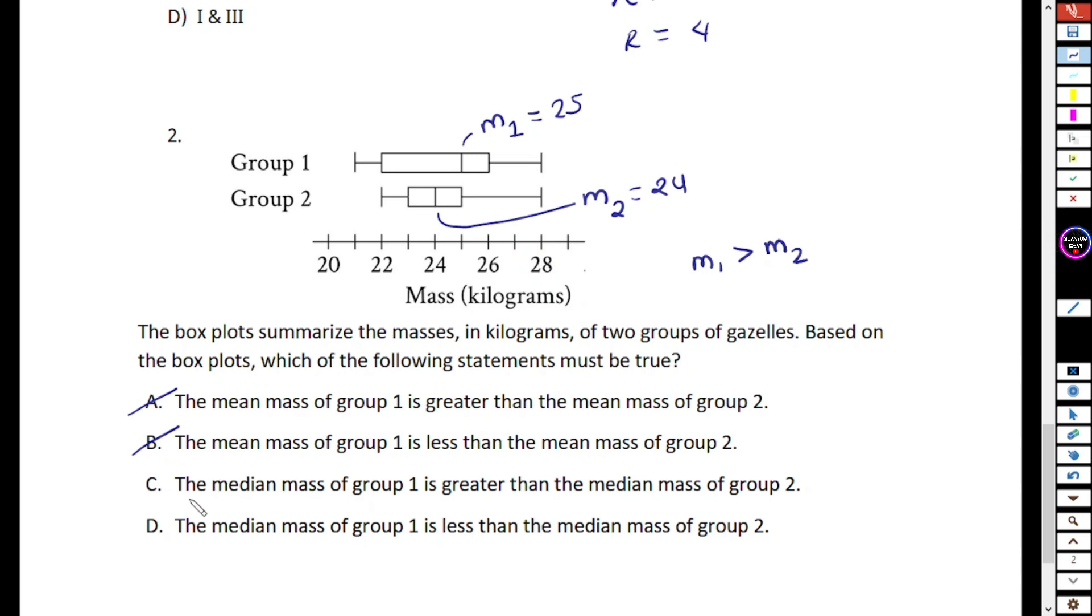Let's read the option. The median of group one is greater than the median mass of group two. That's correct. So C is the correct answer.